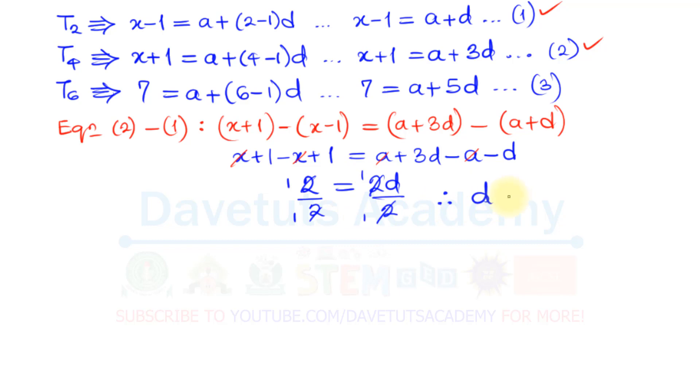Since I got d already, I can substitute d = 1 in my equation 3. This is equation 3, let me substitute the value of d into that so that I can get a. So I can say that is 7 = a + 5 multiplied by d, but since d is 1, I can have 1 to be used there. Therefore, 7 = a + 5, and this means that a is 7 minus 5, so a = 2.